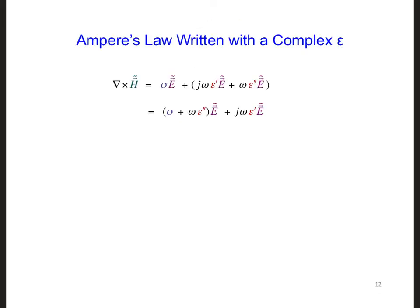If we write Ampere's law using a complex permittivity, rather than only assuming it has a real value, we get what's shown here. So this used to be just j omega epsilon E, and now we have both epsilon prime and epsilon double prime. Looking at these different terms, the real part of the permittivity, epsilon prime...